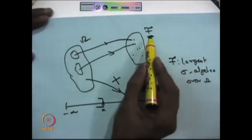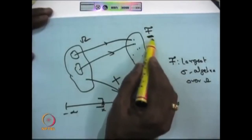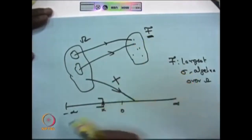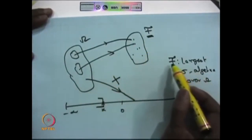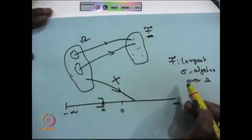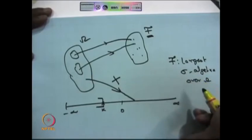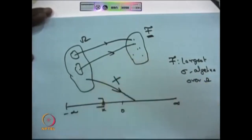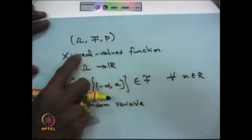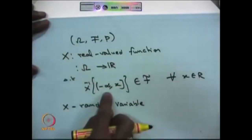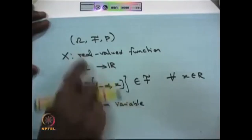In the usual scenario, many books simply say a real-valued function is a random variable — that means they have taken F to be the largest sigma algebra. When F is the largest sigma algebra, any real-valued function is a random variable. Going back to the previous slide, this condition is also an if-and-only-if condition: if a real-valued function is a random variable then this condition is satisfied, and if this condition is satisfied then it is a random variable.